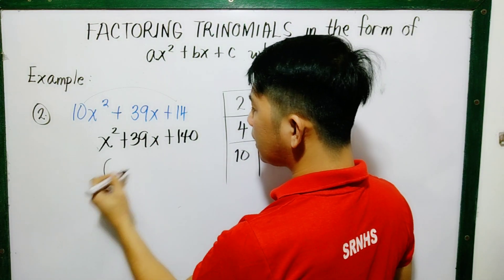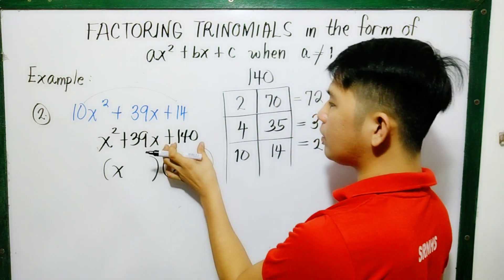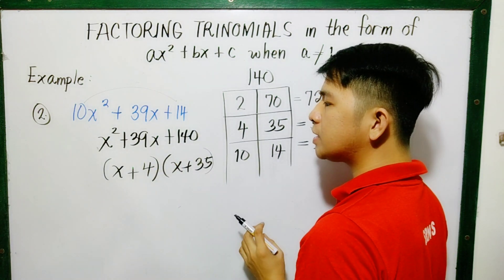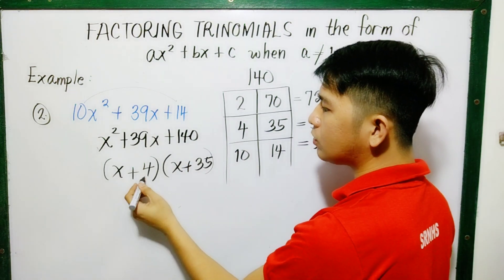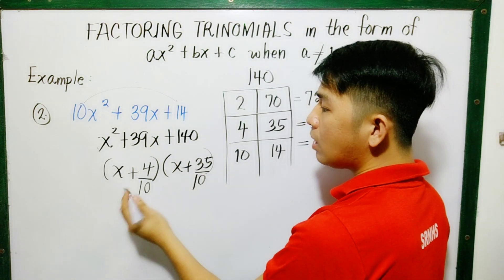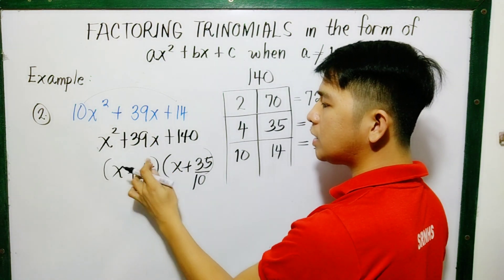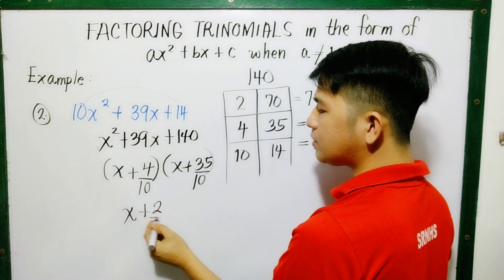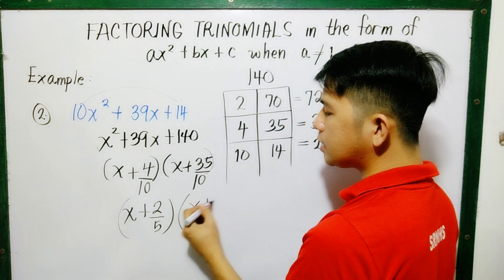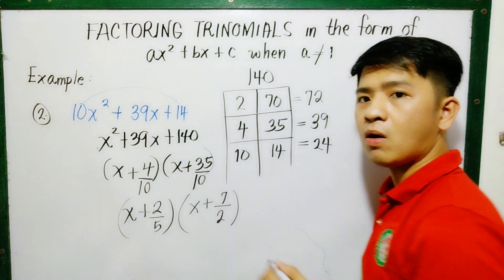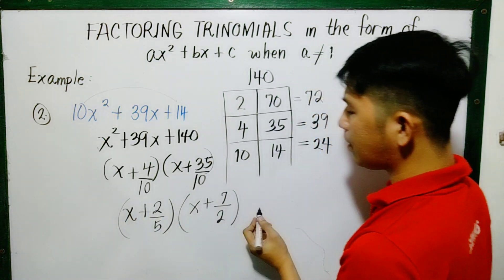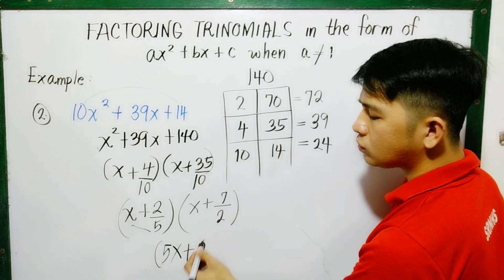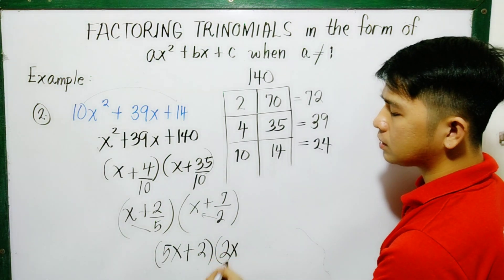So therefore, the factors of this, let's put parentheses. So x and x for x squared, for 140 we have 4 and 35, both positive. We're not finished because we multiplied by 10 to make it balanced. So let's divide this now by 10. So using your concepts in fractions, we will reduce this into its lowest term because they're not divisible. So x plus, by 2 that is 2. By 2 that is 5. By 5 that is 7. By 5 that is 2. So let's remove the denominators and put them there. So what will happen, this becomes 5x plus 2. And this one is 2x plus 7.